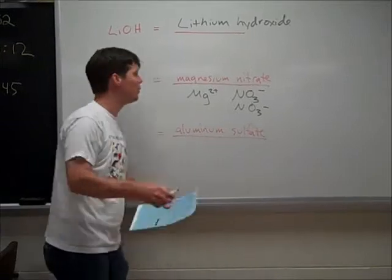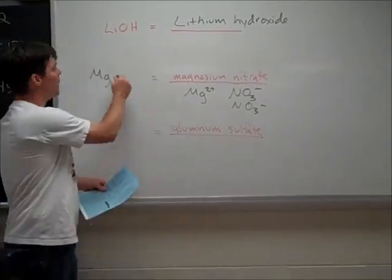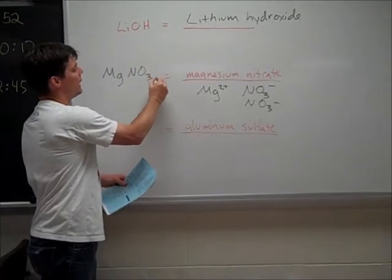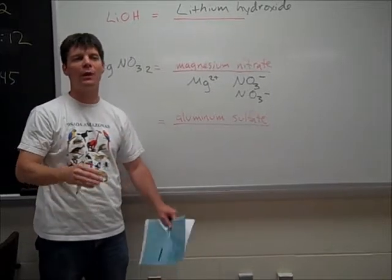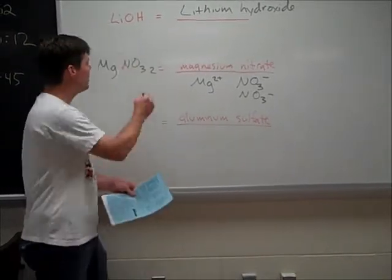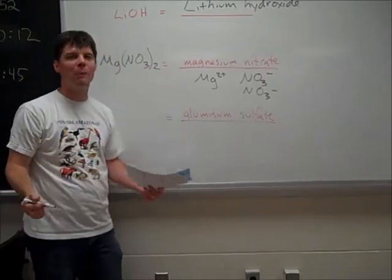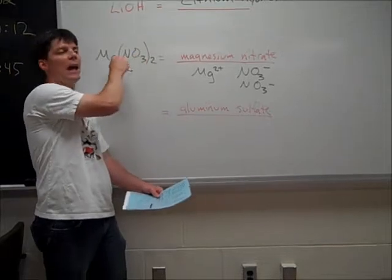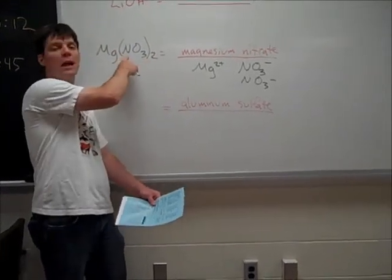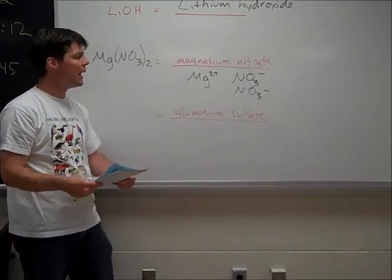Now how do I write this in a chemical formula? Mg, that's easy. I'm going to write NO3. Now, this doesn't make any sense. This would be a nitrogen with 32 oxygens paired with it. I need to use parentheses, kind of like when you're doing this in math. The parentheses distribute this two to the oxygen and the nitrogen multiplying.